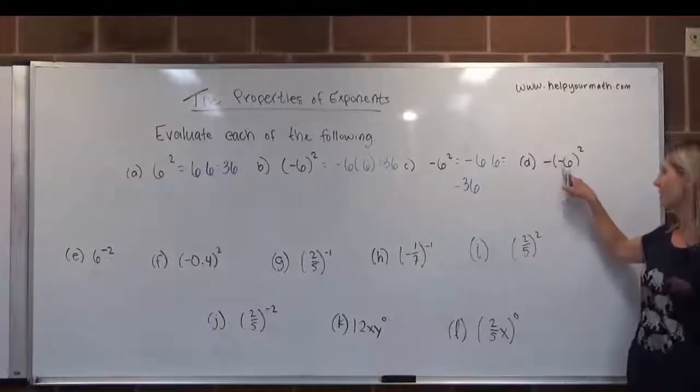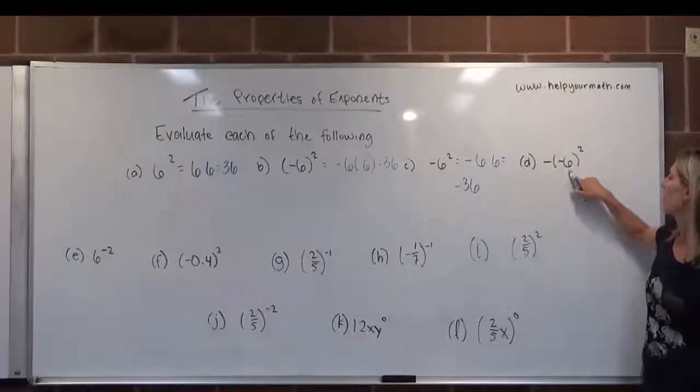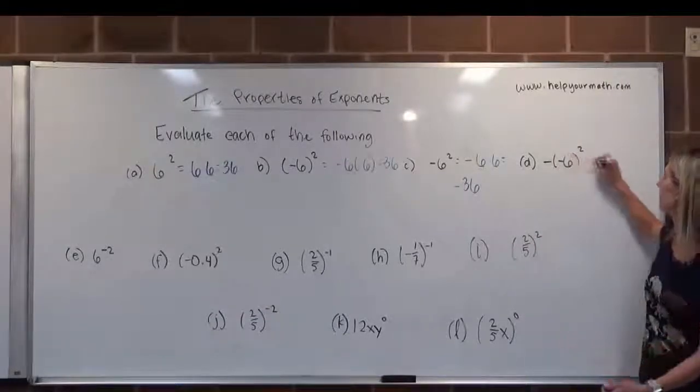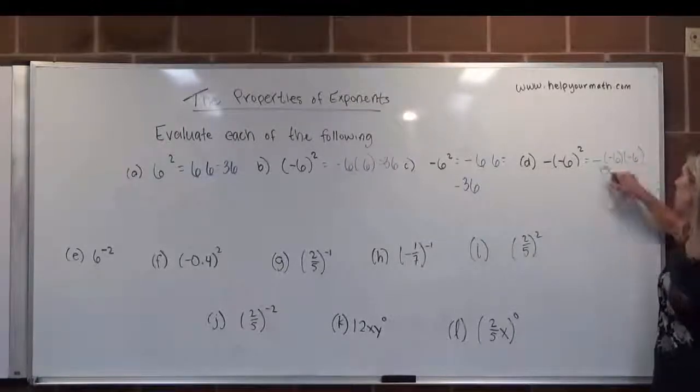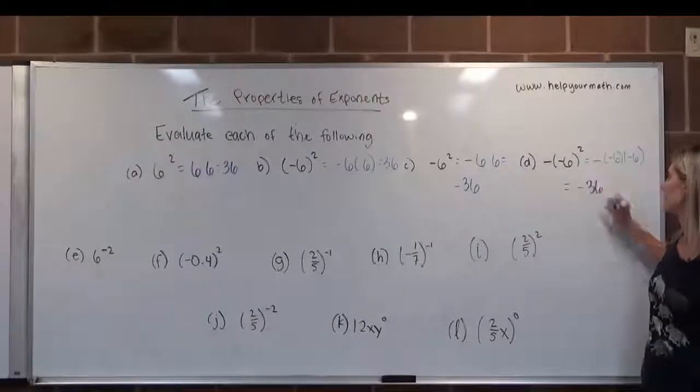In letter D, we have negative of negative 6 quantity squared. So this time, we're squaring negative 6, but that negative is still out in front. So we have this negative out in front, and then we have negative 6 twice. So we have three negatives, which means the product will be negative, and 6 times 6 is 36.